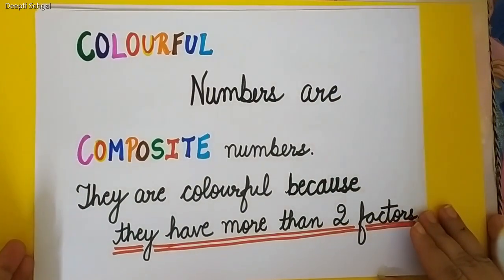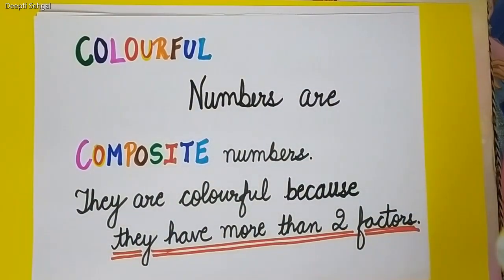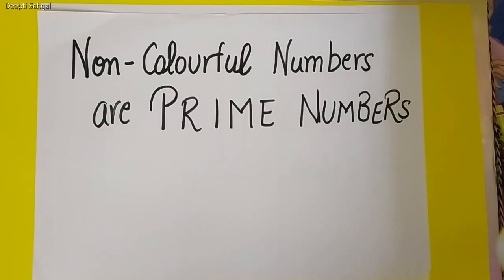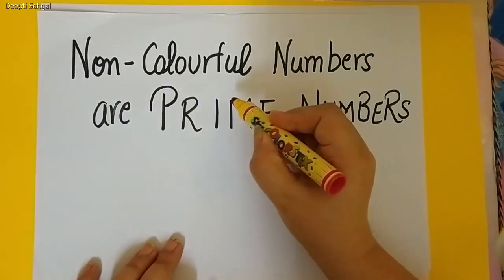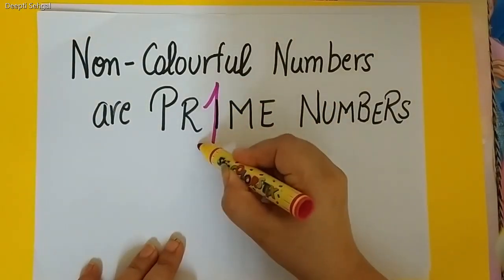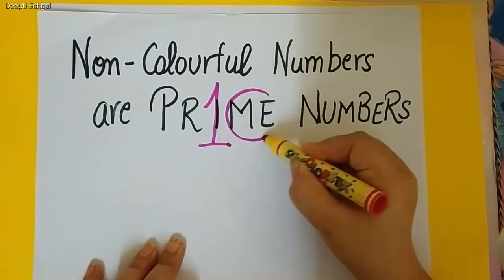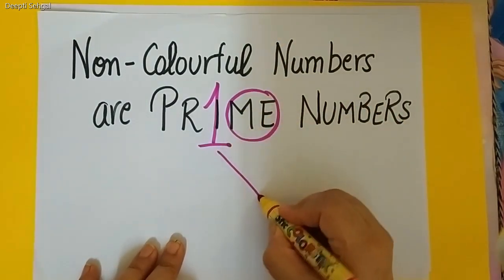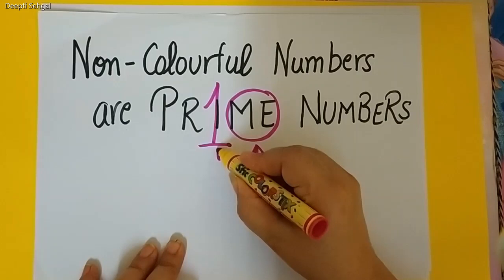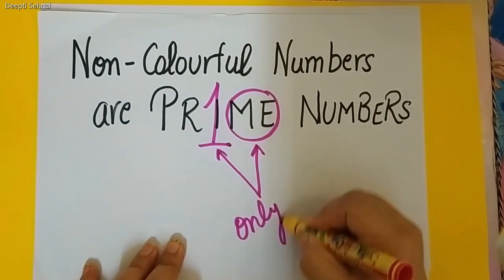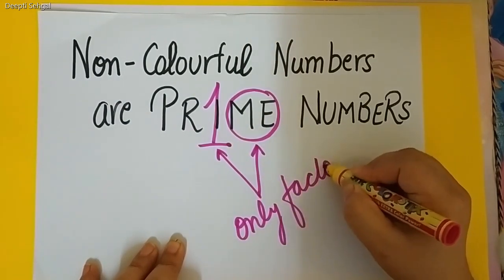So, children, today we have learned about the colorful numbers. Colorful numbers? Yes, colorful numbers are also called composite numbers because they have more than two factors. Non-colorful numbers are called prime numbers. Prime means the number which has 1 and me. The number which has only two factors. The two factors being 1 and the number itself.